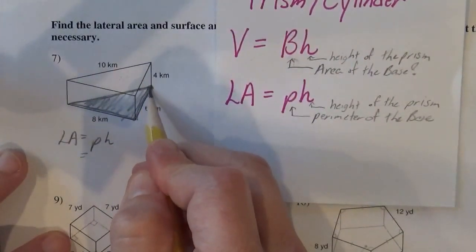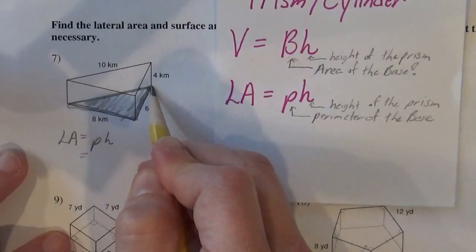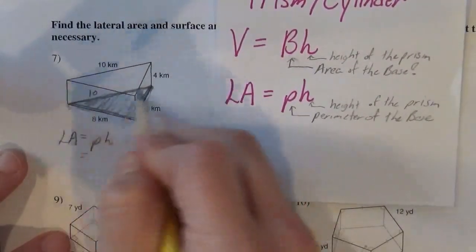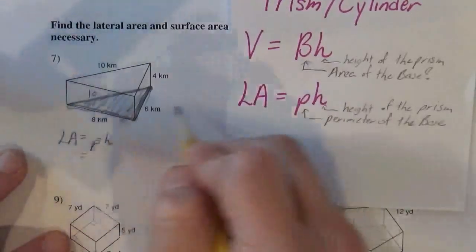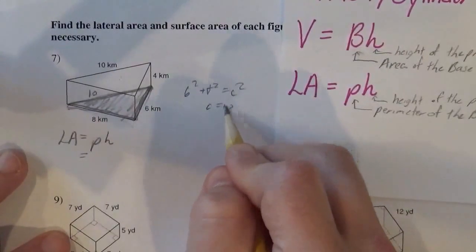So I walk around, start here. I need to add 6 plus 8 plus... I don't know that. So you could do a little Pythagorean theorem, or you could recognize this as 6, 8, and 10. If you did 6 squared plus 8 squared gives you c squared, you would get that c is 10.